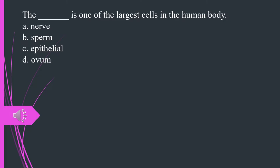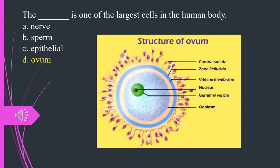What is one of the largest cells in the human body? A. Nerve. B. Sperm. C. Epithelial. D. Ovum. The answer is D. Ovum.